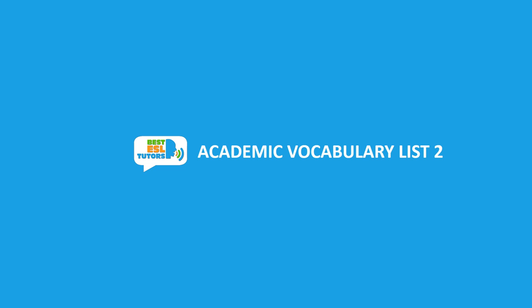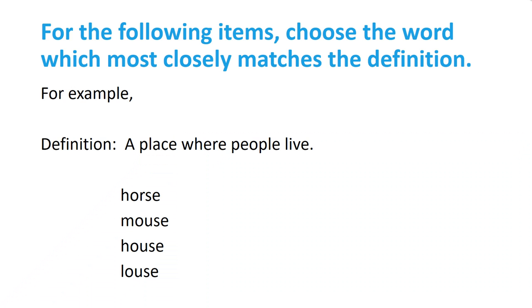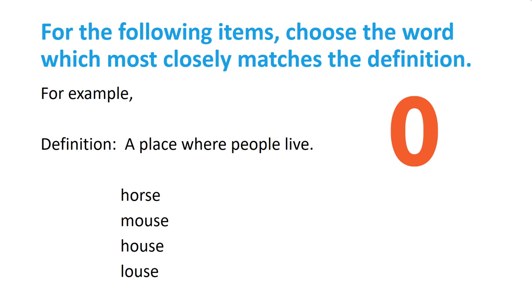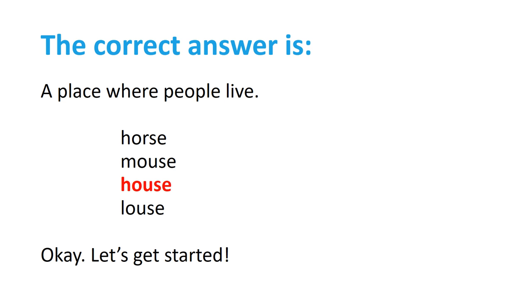Academic Vocabulary List 2. For the following items, choose the word which most closely matches the definition. For example, a place where people live. The correct answer is house.